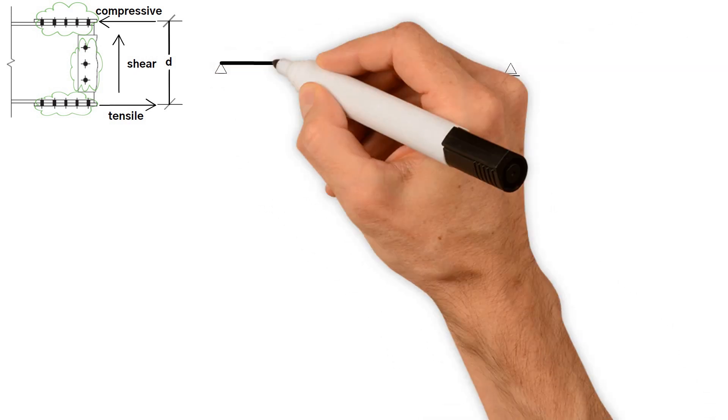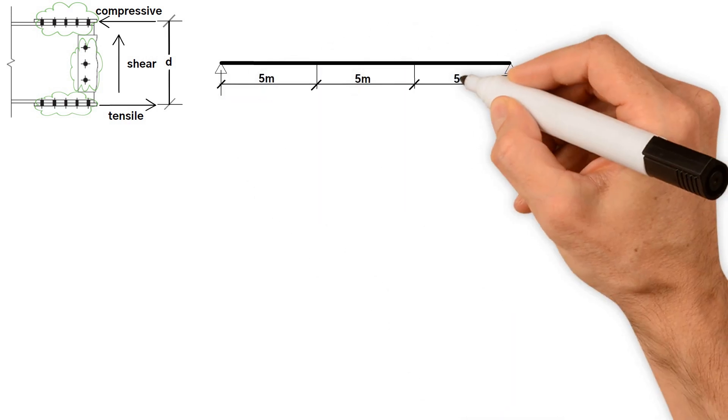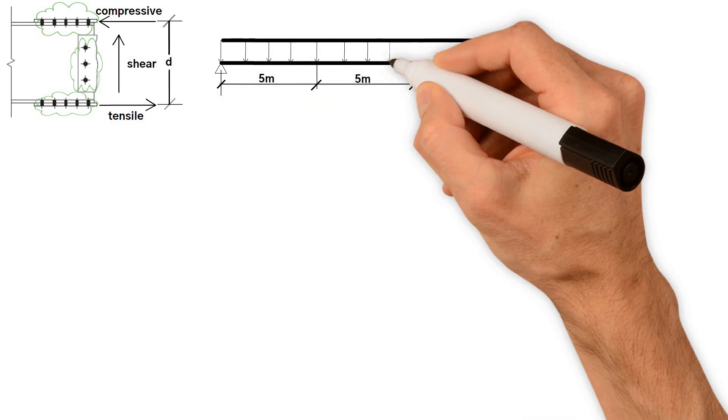Here we have a simply supported beam that spans 15 meters and is to be fixed inside an existing building. Because of access problems, the beam must be split into three pieces of equal length.